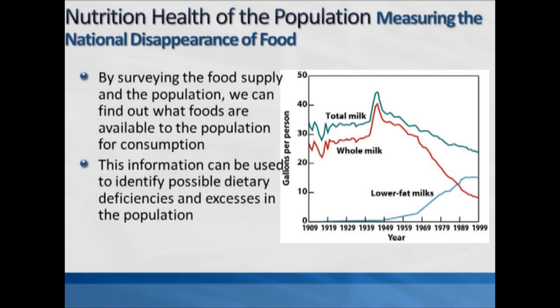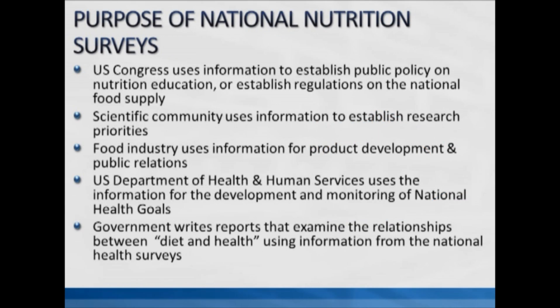This particular graph is drawn up specifically in terms of disappearance of food — rather than looking at specific dietary intakes, we're looking at how much food is disappearing from the inventory. In this example we're looking at how whole milk is disappearing from the national inventory and how low-fat milk is coming up a little. National nutrition surveys are also very important alongside food disappearance data in understanding population health.